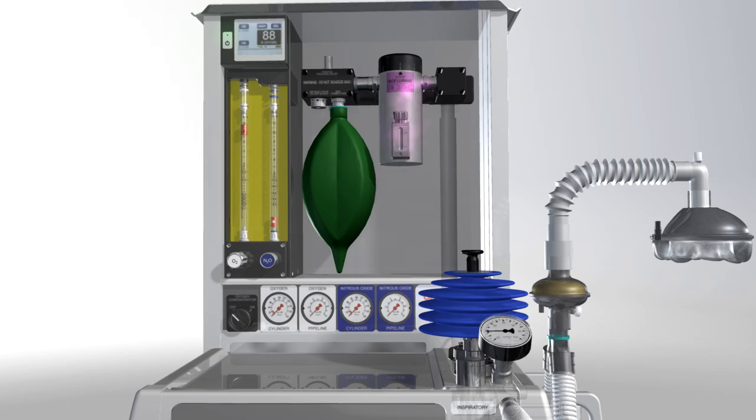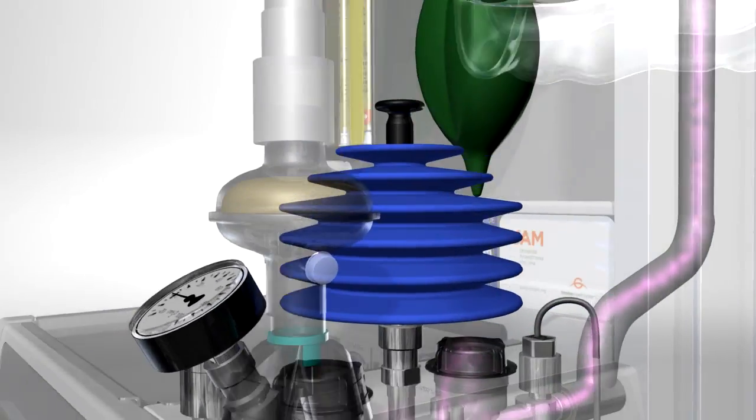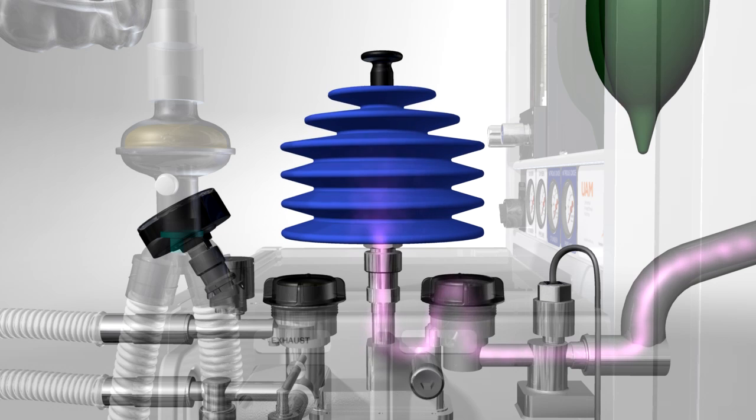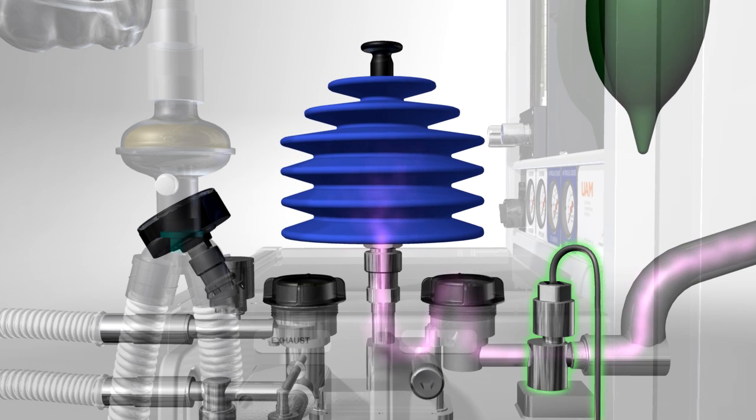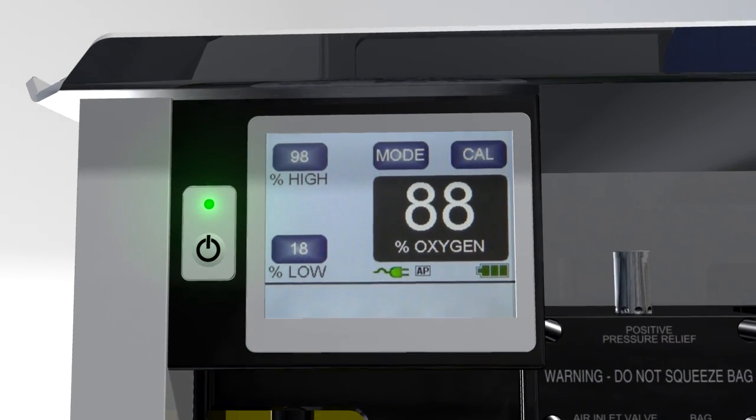The anesthetic gas flows from the back bar at low pressure to the breathing block and the bellows. A sensor reads the oxygen concentration of the gas passing to the patient. The reading is displayed on the oxygen monitor screen.